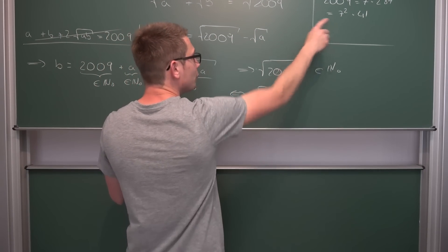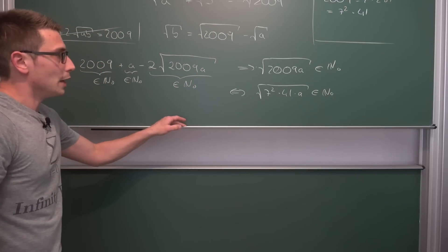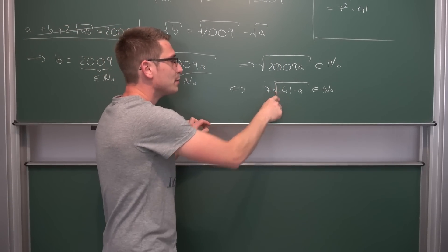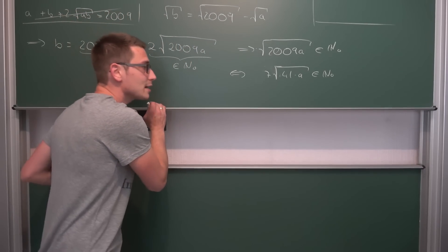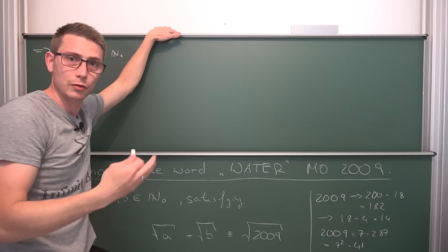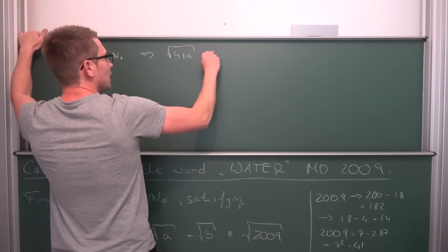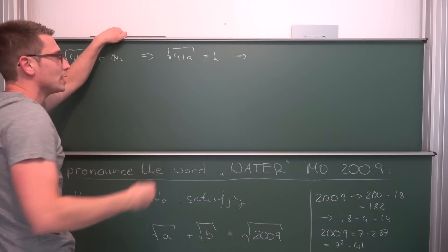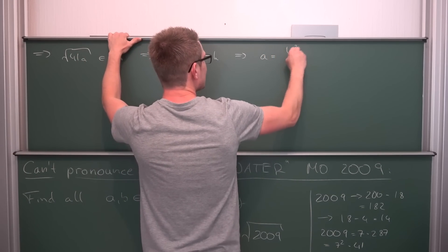Now we have that the square root of 7 squared times 41 times a must be an element of the natural numbers with zero. We can break out the square root of 7 squared, which is just 7. By closure, since 7 is a natural number, we must have that square root of 41 times a is an element of the natural numbers with zero. So let square root of 41 times a equal some integer k. Squaring both sides gives k squared equals 41 times a, and dividing by 41 gives a equals k squared divided by 41.